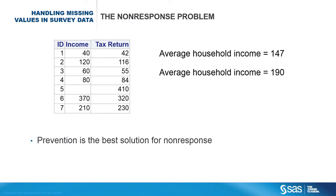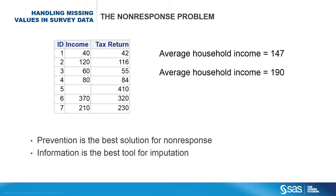Now assume that you work for the IRS and you have tax return information available from the previous year. If you know that household 5 reported 410,000 as their annual income in the previous year, then you will not simply ignore household 5 in computing the average income for that neighborhood. The bottom line is that you must have good auxiliary information to perform imputation.